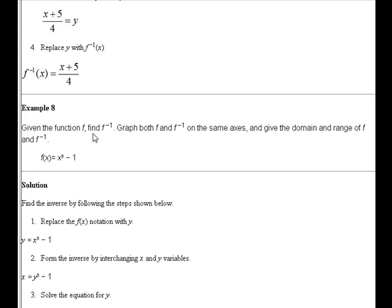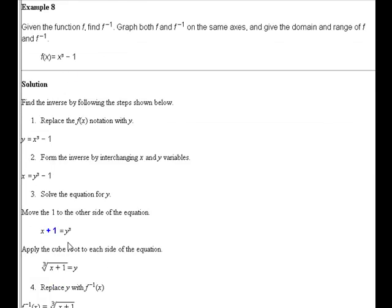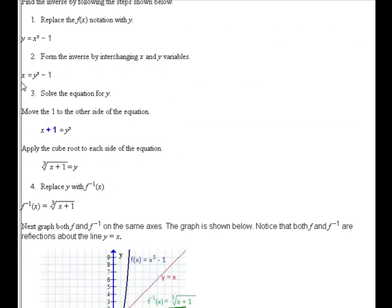Example 8: Given the function, find the inverse, graph both the function and the inverse on the same axes, and give the domain and range of f and f inverse. Here we have the cubic function f of x equals x to the third minus 1. Replace f of x with y: y equals x cubed minus 1. Form the inverse by interchanging x and y: x equals y cubed minus 1. Solve for y by adding 1 to each side — x plus 1 equals y cubed — then take the cube root: the cube root of x plus 1 equals y. So f inverse of x equals the cube root of x plus 1.